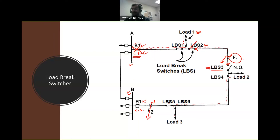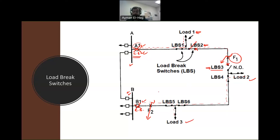Let's see another scenario: a fault at F2. Since LBS3 is normally open, bus A does not see this fault. Only circuit breaker B1 sees the fault and opens to clear it. The fault is now isolated from both sides. However, load 2 and load 3 now have no power. To isolate the fault properly, we open the normally closed LBS5 so the fault is isolated from both the circuit breaker side and the load brake switch side.